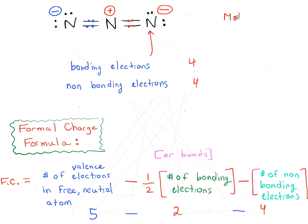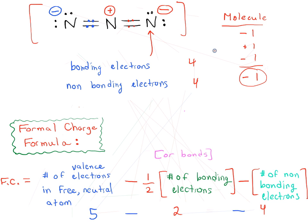The overall charge for the molecule is minus one plus one minus one, giving a total charge of minus one. So this molecule as a whole has a charge of minus one. This anion comes up later when discussing substitution reactions — it's called the azide ion or azide anion, and is sometimes abbreviated as N₃⁻.